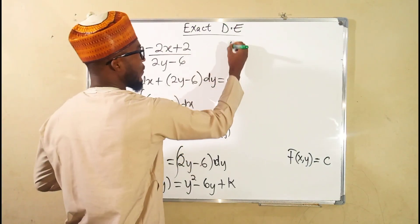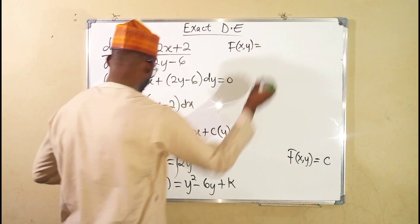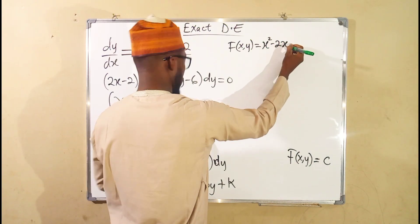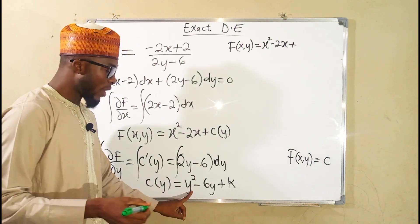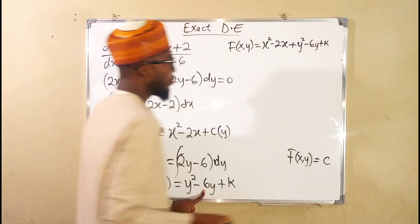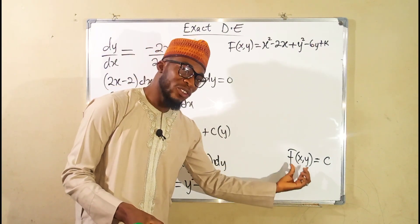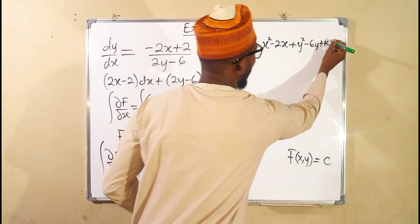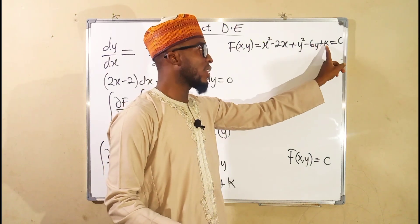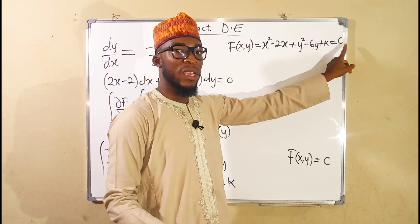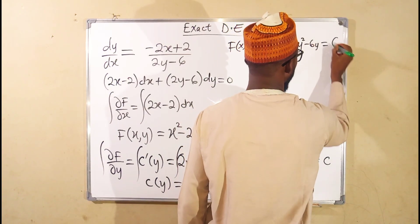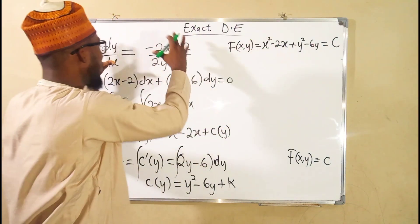We now substitute c(y) into our expression for f. So f(x, y) equals x squared minus 2x plus y squared minus 6y plus k. Since our general solution is f(x, y) equal to some constant, we subtract k from both sides — k on the left gives zero and the constant minus k on the right is still a constant. Therefore, the general solution is x squared minus 2x plus y squared minus 6y equals C.